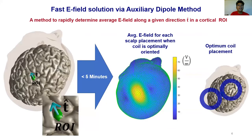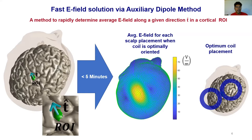What we have developed is the Auxiliary Dipole Method, or ADM. ADM enables us to directly determine electric fields induced in the ROI due to many coil placements very rapidly, which in turn enables us to find the optimum coil position and orientation. We can determine the electric fields generated at the ROI for one million coil positions in under five minutes using a standard laptop computer.